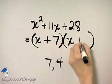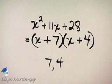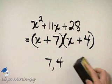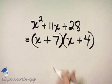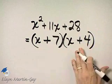And I have x plus 7 times x plus 4. It makes no difference in order here. I could have written x plus 4 times x plus 7. Makes no difference because multiplication is commutative and associative. So here is my factorization.